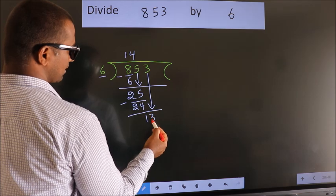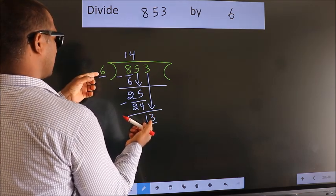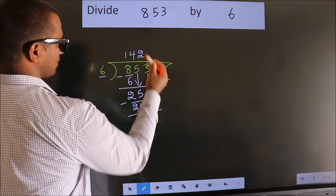So 3 down. 13. A number close to 13 in 6 table is 6 twos 12.